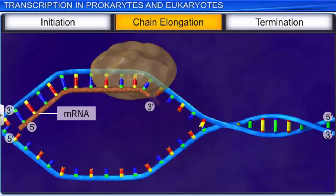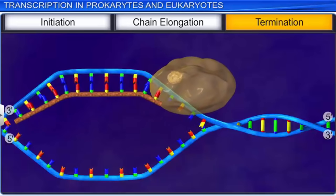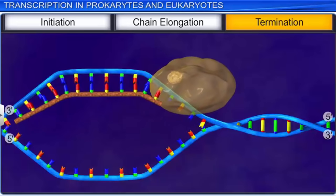The final stage of transcription is termination, in which the polymerase, along with termination factor represented by rho, reaches the terminator region, and the newly created mRNA falls off along with the enzyme. This marks the end of prokaryotic transcription.